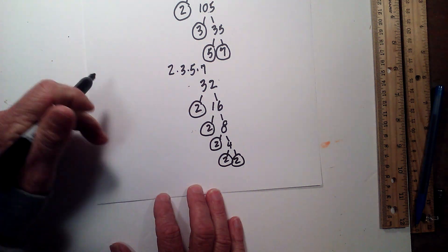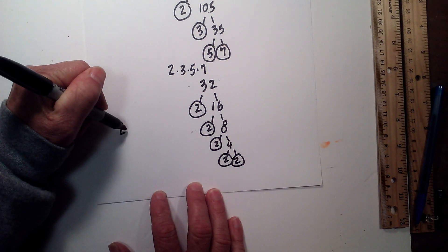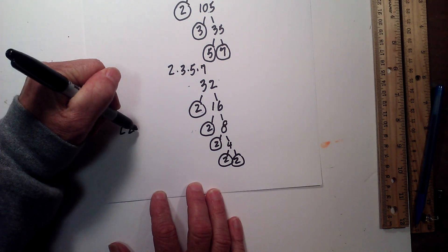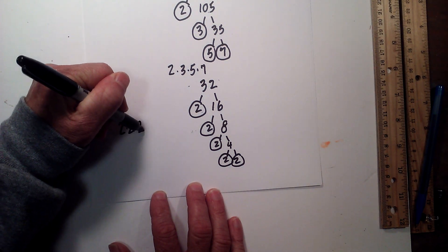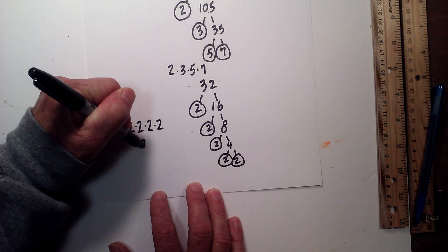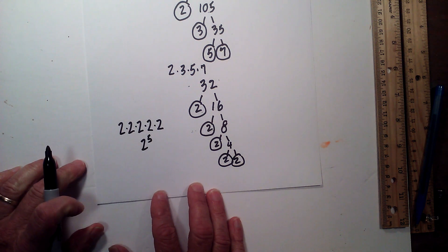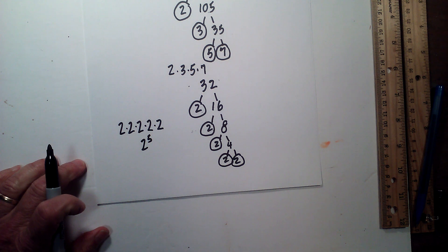So the prime factors of 32 are 2 times 2 times 2 times 2 times 2, or 2 to the 5th. So there we go.